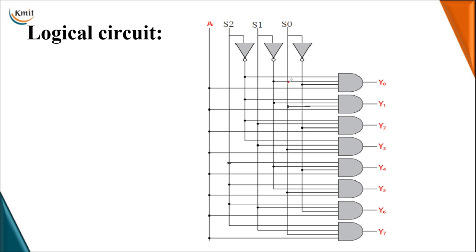For Y0: S2_bar, S1_bar, and S0_bar are connected. For Y1: S2_bar, S1_bar, and S0 are connected. For Y2 (when S2, S1, S0 = 0,1,0): S2_bar, S1, and S0_bar are connected to the third AND gate. For Y3 (when S2, S1, S0 = 0,1,1): S2_bar, S1, and S0 are connected to the fourth AND gate. The fifth AND gate generates output for 1,0,0 on S2, S1, S0.